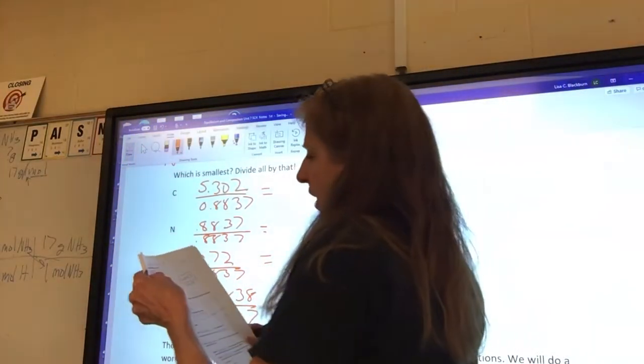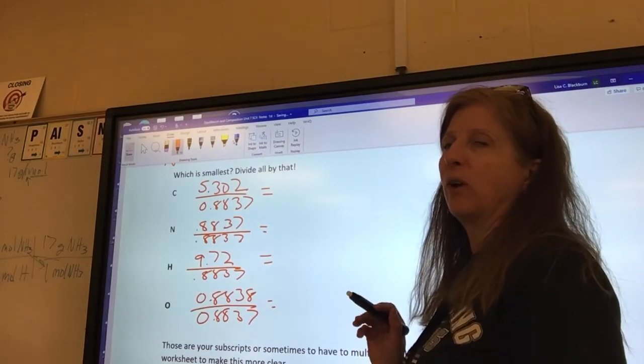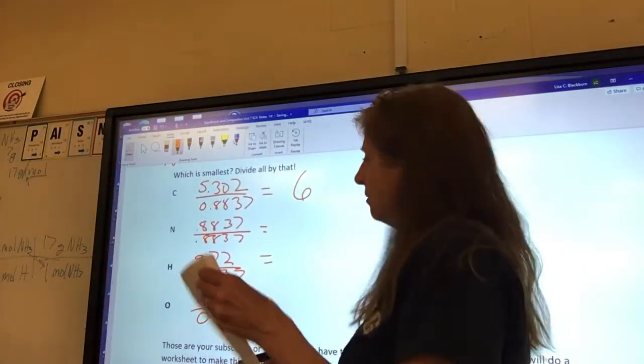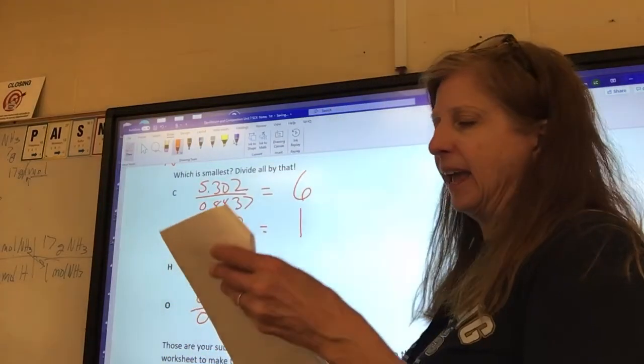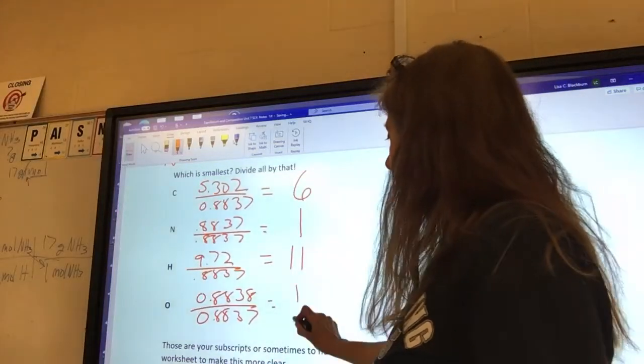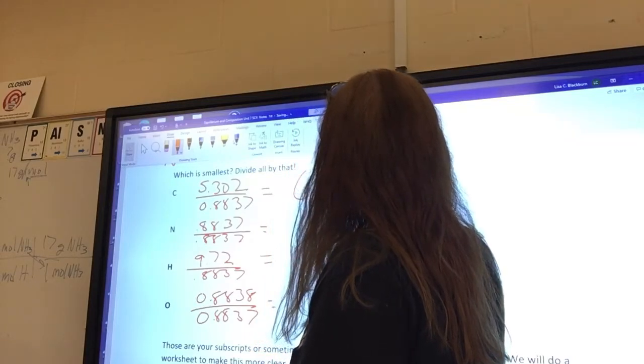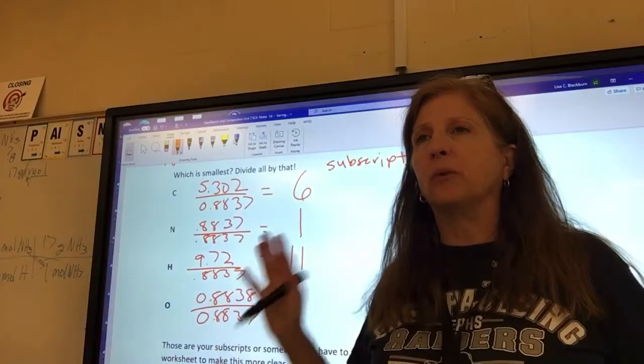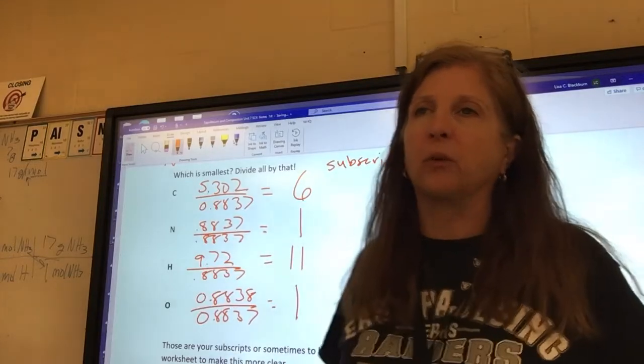So carbon was 5.302 divided by 0.8837. And then we do nitrogen, 0.8837 divided by 0.8837. And then we do hydrogen, 9.72 divided by 0.8837. And then we do oxygen, 0.8838 divided by 0.8837. This is why you keep a lot of decimal points for this. What is 5.302 divided by 0.8836? Round it off to a whole number. Or a half. Or a third. If you can round it to a whole, round it. It's 6, right. What about this divided by itself? 1. What about 9.72 divided by 8.837? 11. And then these, round it off, is 1. So these are our subscripts.